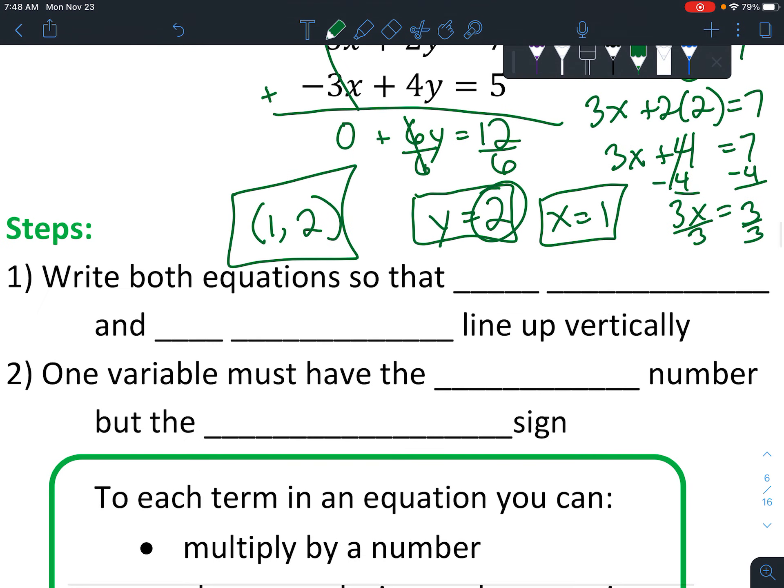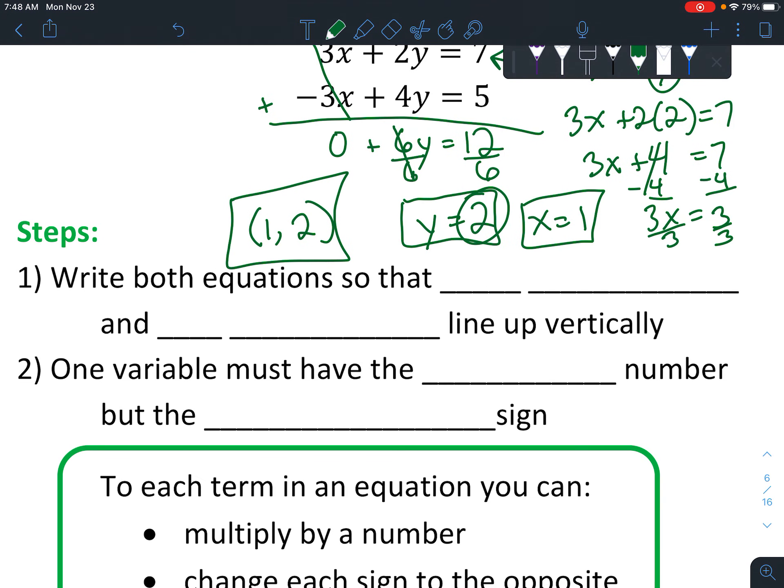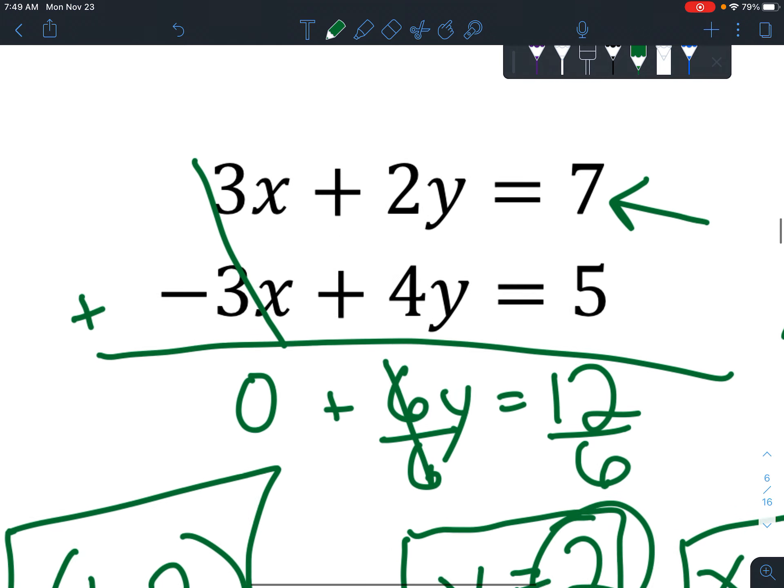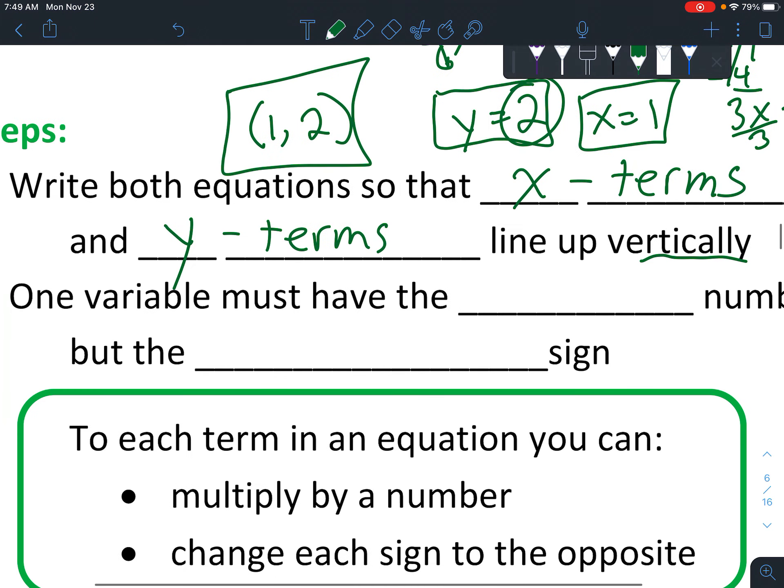So let's just write down the steps here. We kind of already went over it, but let's just write it so you have it. Write both equations so that x terms and y terms line up vertically. So that was when we stacked them like this.